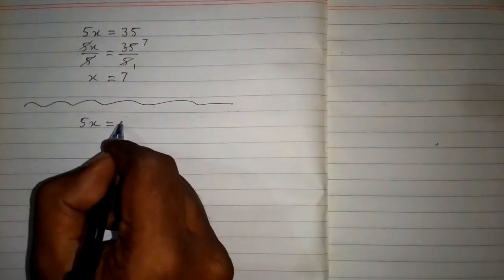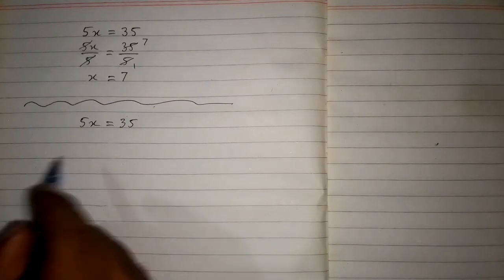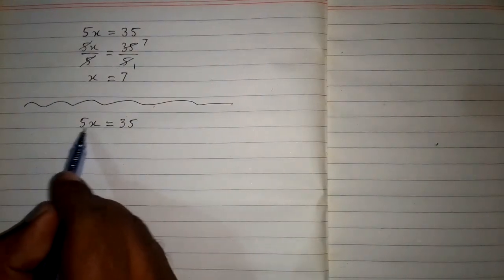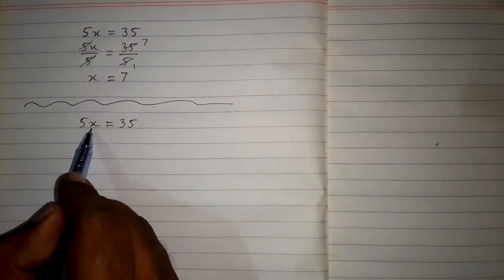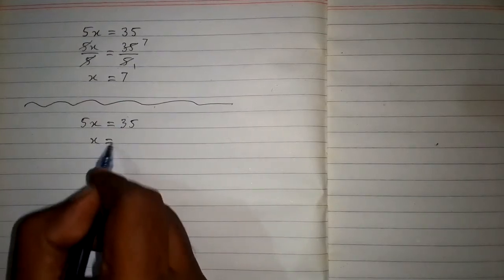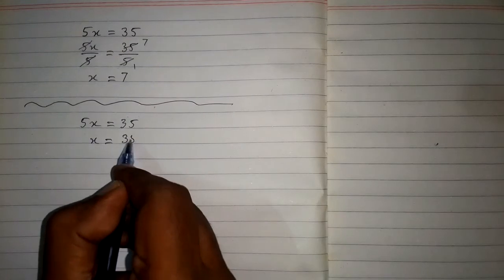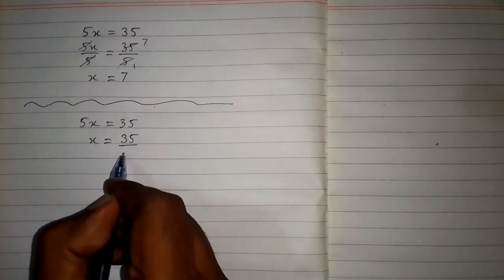So we have 5x is equal to 35 and here we can see that since this 5 is multiplied by this x, so if we take 5 on the other side of equation, this 5 will divide 35.